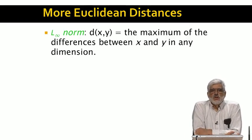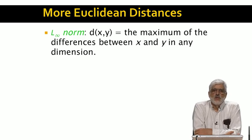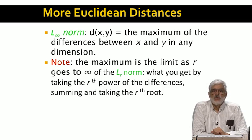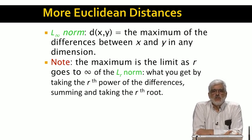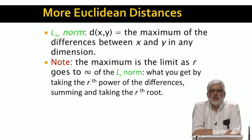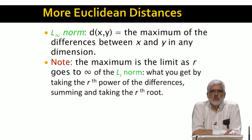Here's another interesting Euclidean distance measure called the L-infinity norm, where the distance between two points x and y is the largest of the distances between x and y in any of the dimensions. In fact, we can define the L sub r norm for any real number r: compute the sum of the r-th powers of the differences along each dimension, then take the r-th root. As r gets larger, the largest difference dominates, and taking the r-th root of the r-th power gives back essentially just the largest of the differences.